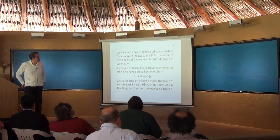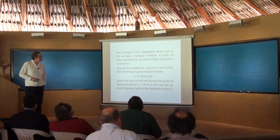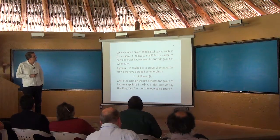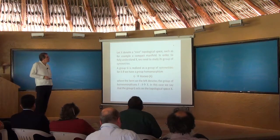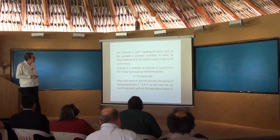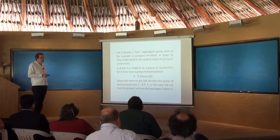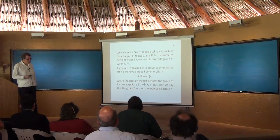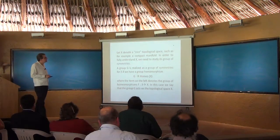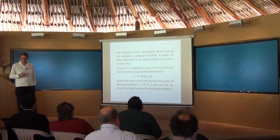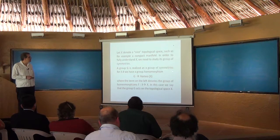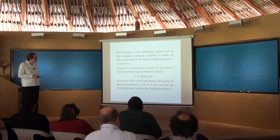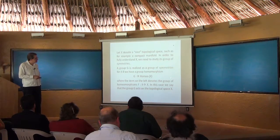We do away with very rigid geometric or algebraic structures; we're thinking of this as topologists. We want to consider nice topological spaces — certainly compact manifolds fit in that. More generally, you think about spaces built out of cells, so-called CW complexes. One of the things you learn in mathematics is that to understand a space X, you have to study its group of symmetries. We think of a group as realized as a group of symmetries for X if there's a group homomorphism from G to the homeomorphisms of X.